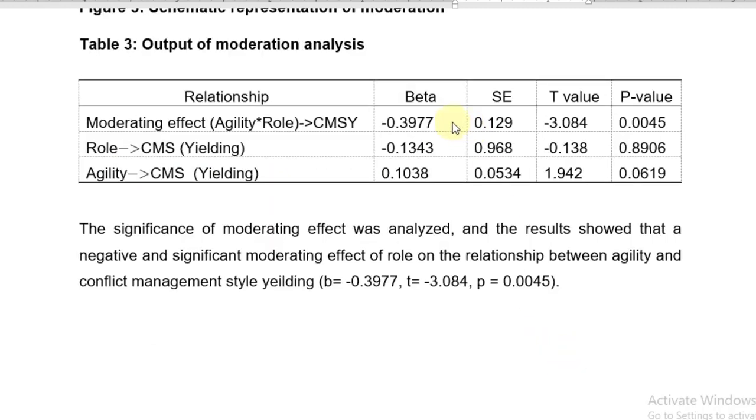Here I presented the result in the tabulated form. You can see the p-value of role and agility individually are insignificant and their moderating effect is found to be significant. So the significance of the moderating effect was analyzed and the results show that a negative because we have this beta value is negative.